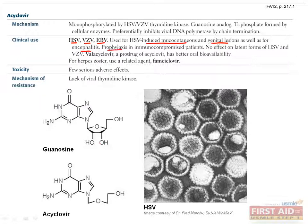Acyclovir is also considered a prophylactic agent in immunocompromised patients. It should be noted, however, that acyclovir is only effective against active HSV and VZV, not the latent forms. Valacyclovir is a pro-drug of acyclovir with better oral bioavailability. For herpes zoster, use the related drug famciclovir.